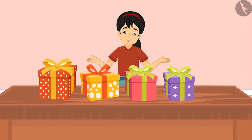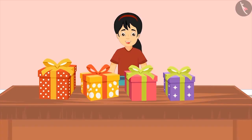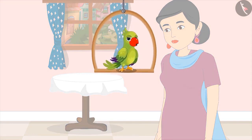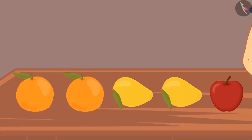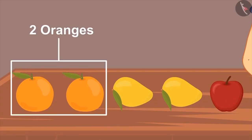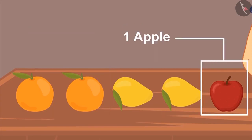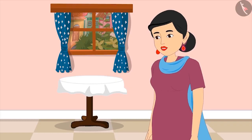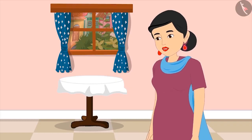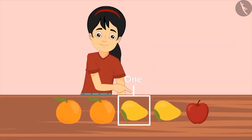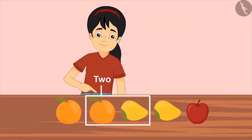Mom, can I open and see my gifts now? Yes, my dear. It is evening and Pinky is placing the fruits on the table in a line. First, she kept two oranges, then two mangoes, and finally an apple. Pinky, let me cut mangoes for everyone. Can you give me two mangoes?